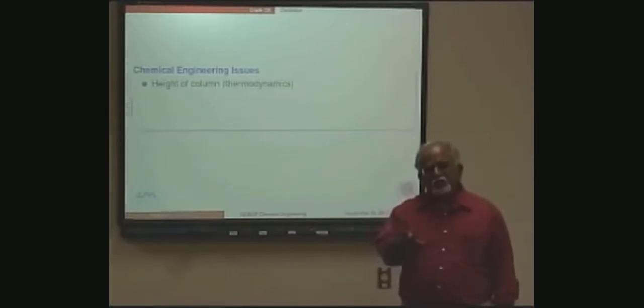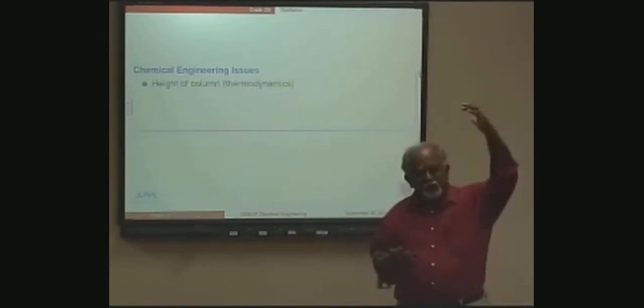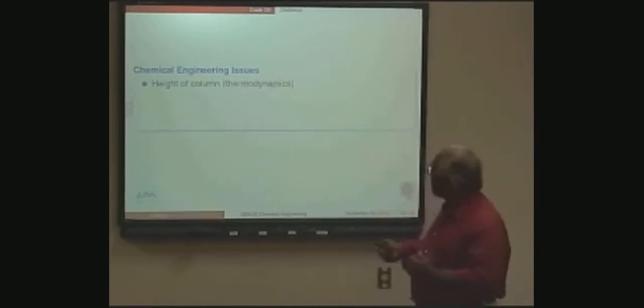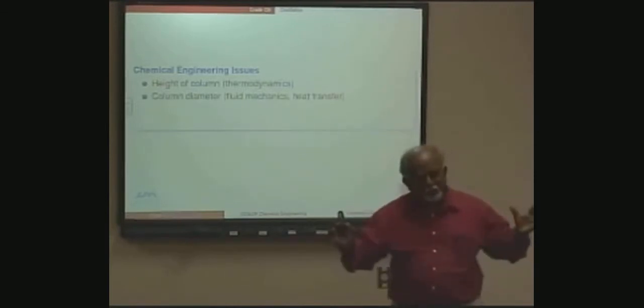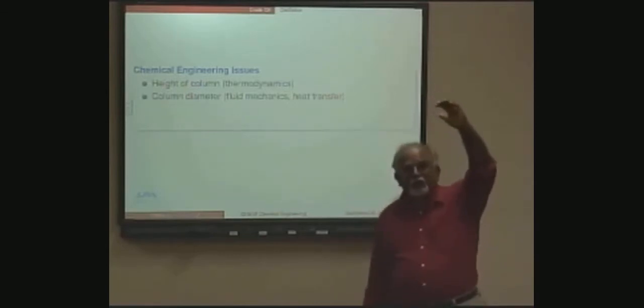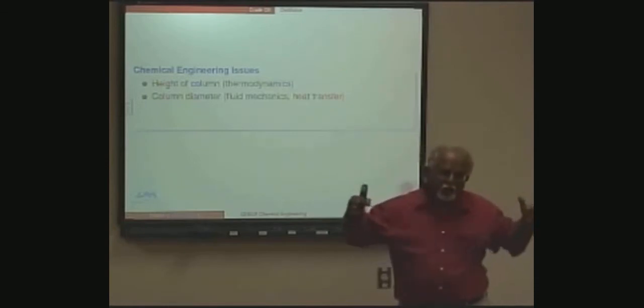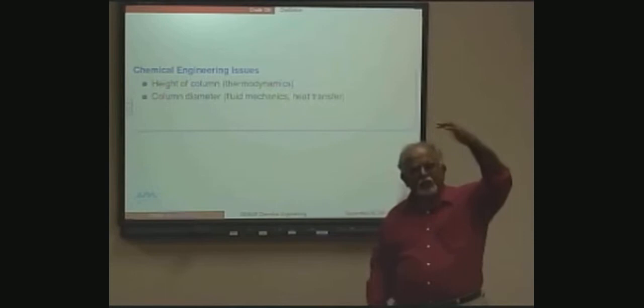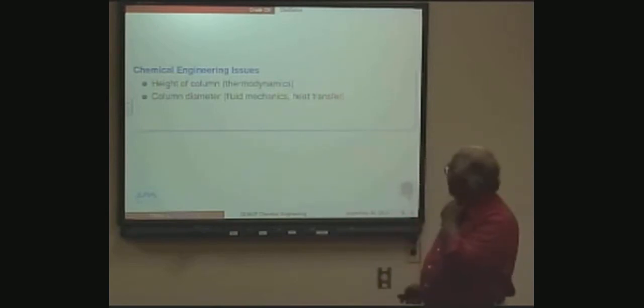The chemical engineering issues our students learn over four or five years is they learn to do calculations on how big a column should be for crude oil fractionation. How big should it be? Five feet, fifty feet, a hundred feet? They learn these ideas in a class called thermodynamics, understanding the relationship between height, molecular weight, boiling point, and volatility. They learn to calculate the diameter of the column, how big the column should be. It's interesting that the column calculations - diameter and height - actually involve different principles. Diameter calculations rely on fluid mechanics, how gas and liquid interact. For height calculations, we need thermodynamics in addition to fluid mechanics. And of course, heat transfer is very important too.